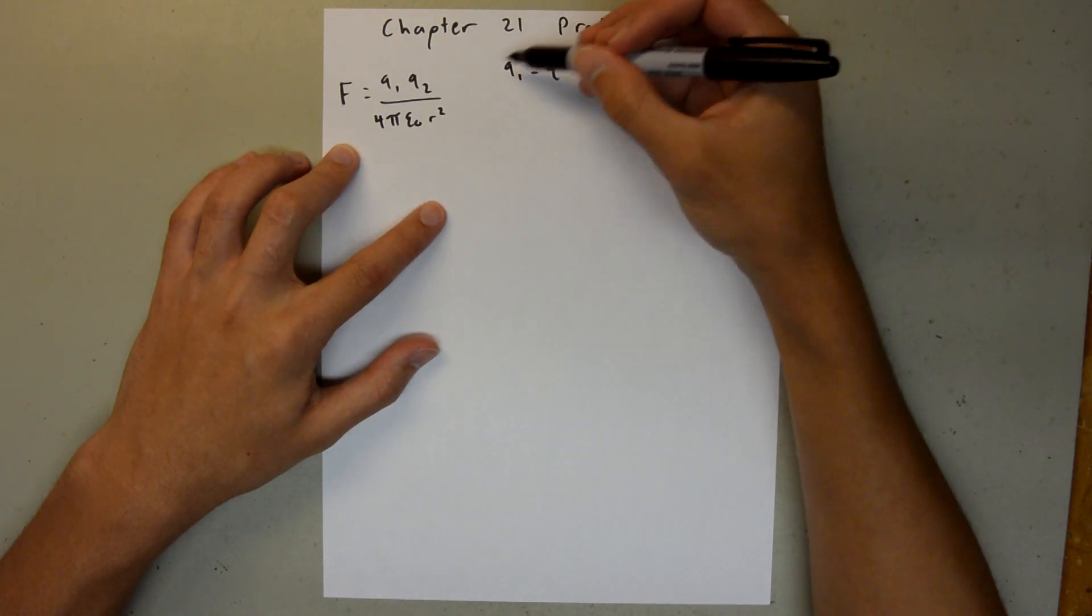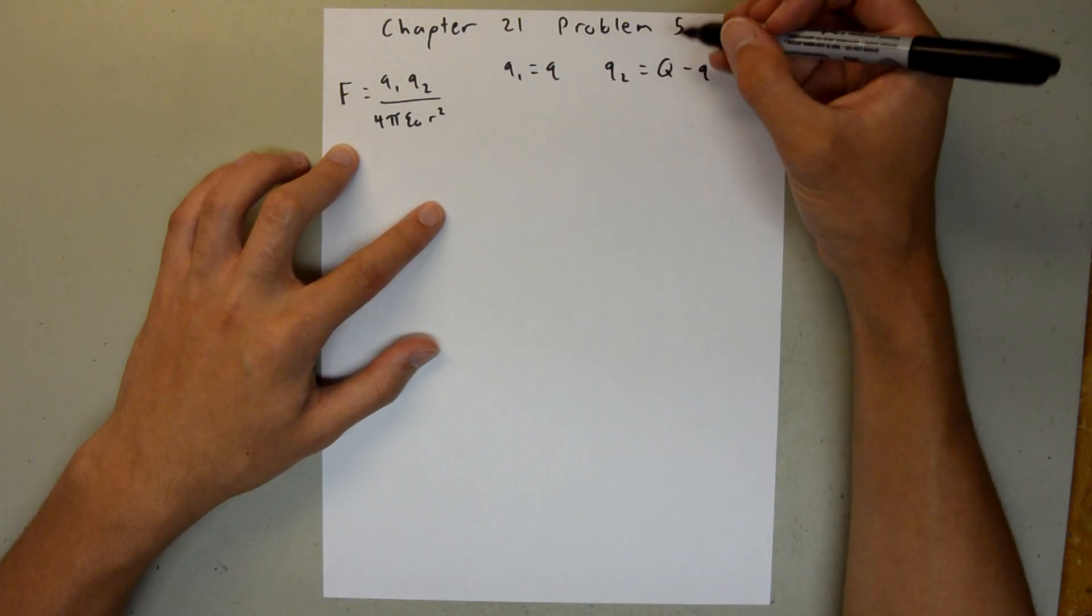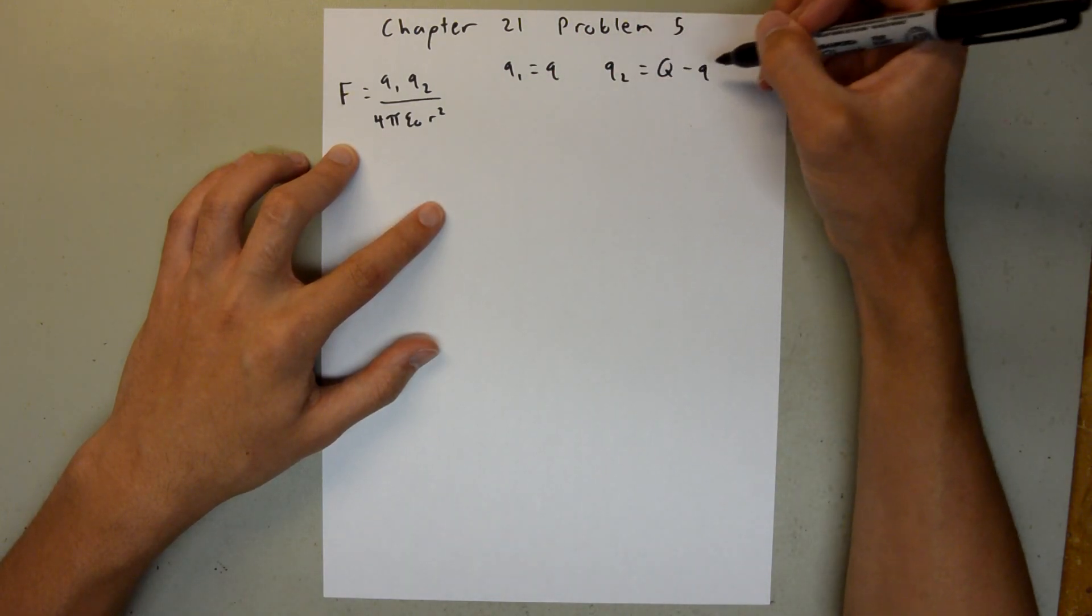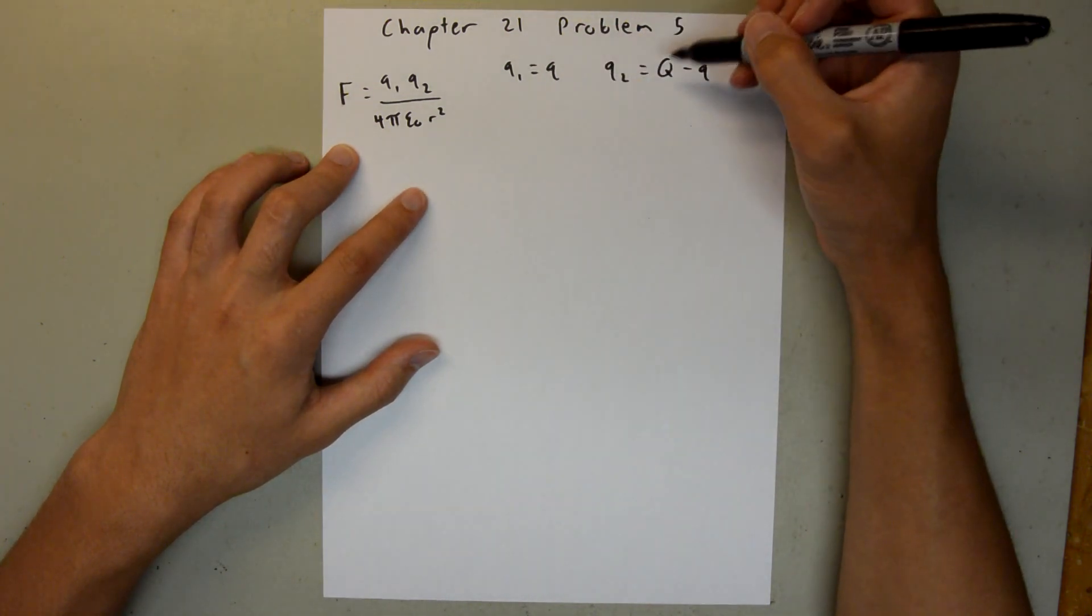So, this is the second sphere that has the portion of charge transferred to it, so it's only going to have that portion. And the other particle, which had the initial charge of Q, is losing that smaller portion q. So, we have q and big Q minus q.